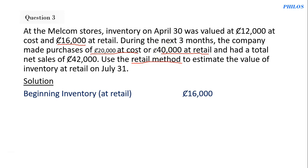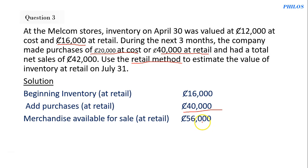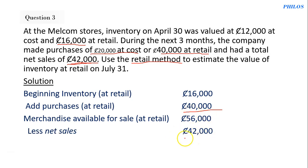The purchases are 20,000 at cost and 40,000 at retail. Be careful — we add purchases at retail, not at cost, because we are using the retail method. So add purchases at retail: 40,000. That gives 56,000, which is the merchandise available for sale at retail. Then subtract net sales of 42,000 from 56,000, giving 14,000. The value of inventory at retail at the end is 14,000.